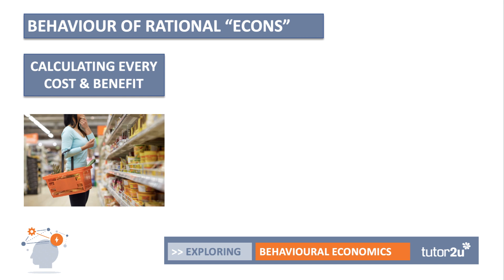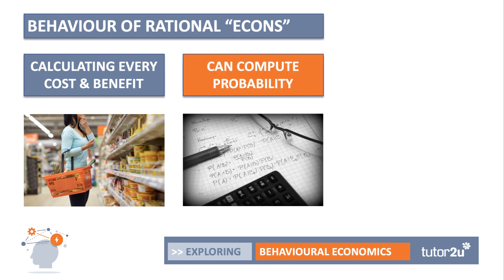So how do we describe the behaviour of rational ECONS, these mythical creatures? First of all, they are willing and able to calculate every single cost and benefit. Going around the supermarket, their brain is working overtime calculating the cost and benefit of every purchase, every selection of vegetables and fresh foods. They are cold, calculating machines. ECONS also have very strong brain power — they can compute probability, they understand risk, they can do the calculations pretty easily.